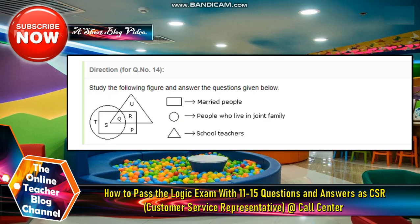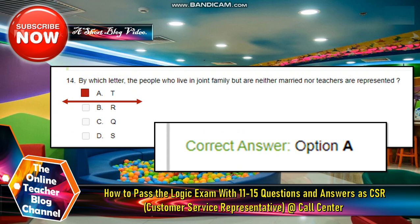Direction for question number 14. Study the following figures and answer the questions given below. As you can see here, the rectangle is married people, the circle is people who live in a joint family, and the triangle is school teachers. So the answer for number 14 is letter A, which is T. The question for this is: by which letter are the people who live in joint family but neither married nor teachers represented? So the answer is letter A, which is T.